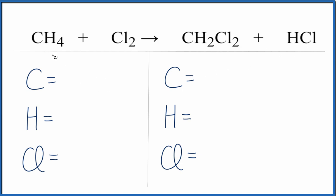Let's count the atoms up. We have one carbon, four hydrogens, and two chlorines.